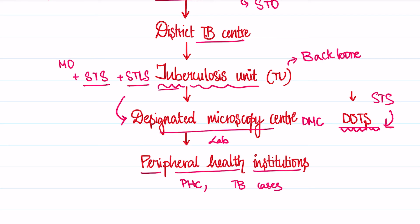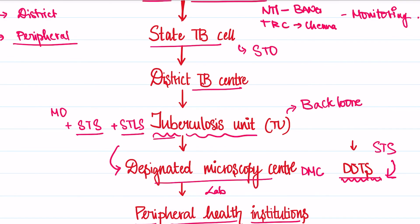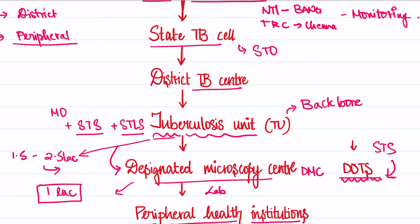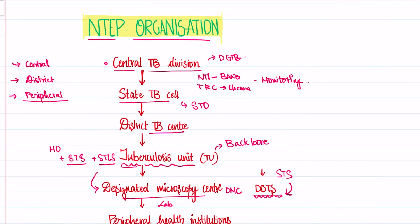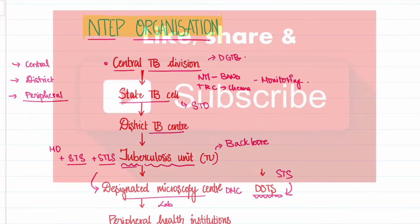There is one DTO — the District Tuberculosis Unit — for every 1.5 to 2.5 lakh population in urban areas, whereas the DMC is for only one lakh population, meaning there is one DMC for one lakh population. Thank you for watching and we'll see you in the next video.